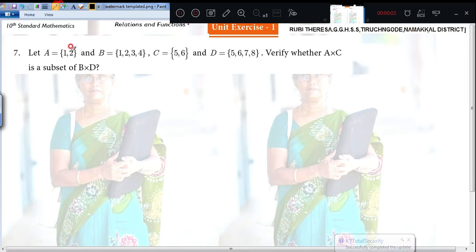Let A equal to 1 comma 2, B equal to 1 comma 2 comma 3 comma 4, C equal to 5 comma 6 and D equal to 5 comma 6 comma 7 comma 8. Verify whether A cross C is a subset of B cross D.